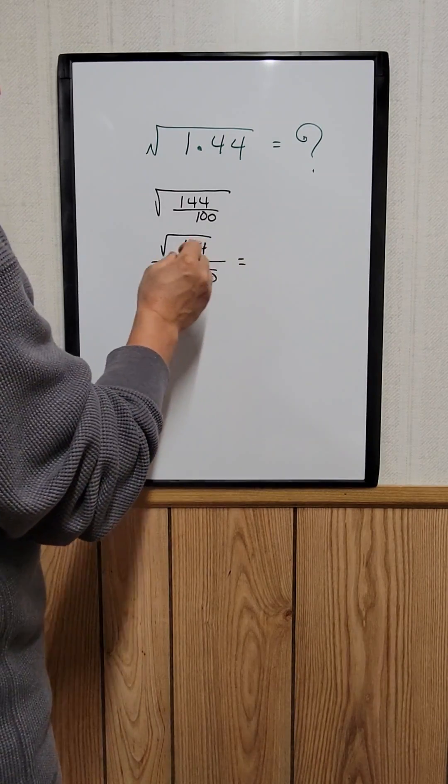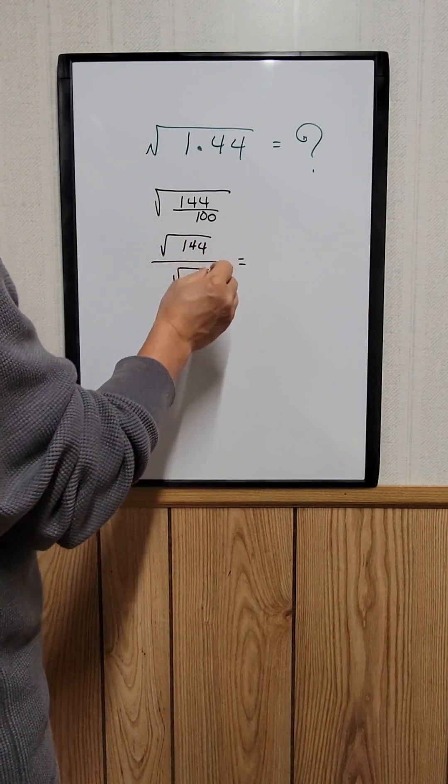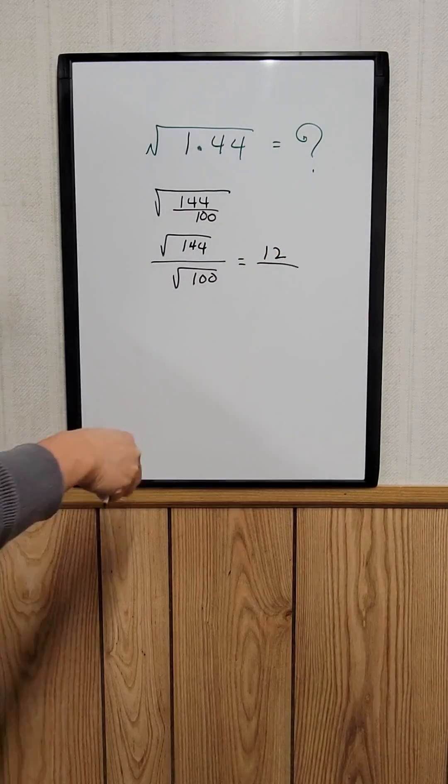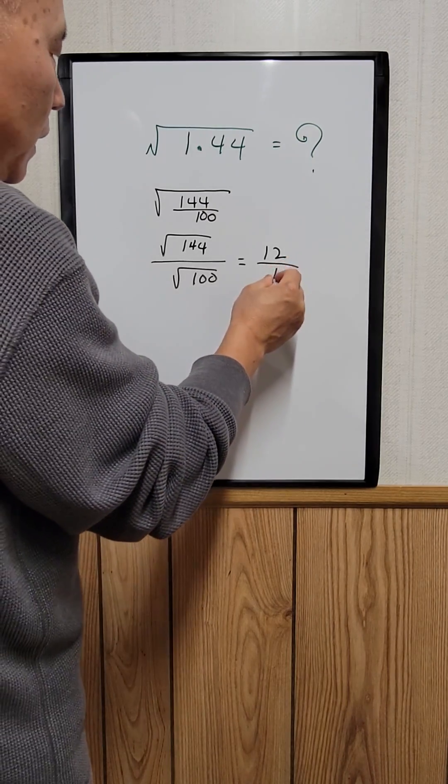The square root of 144 is a perfect square that equals 12. The square root of 100 is a perfect square which equals 10.